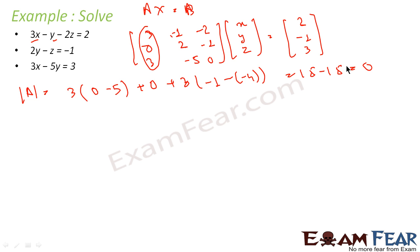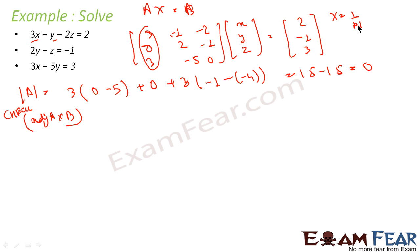Since determinant of A is 0, I now have to check adjoint(A)·B. If this is also 0, we have infinite solutions; if it is some non-zero constant divided by 0, there is no solution. This is because x = (1/det(A))·adjoint(A)·B — if det(A) = 0 and adjoint(A)·B ≠ 0, it's no solution.